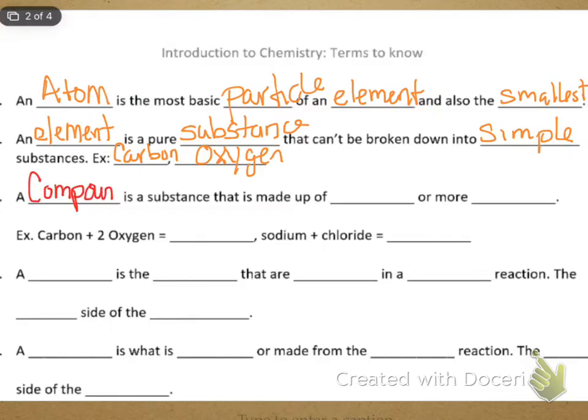Our next term then is compound. A compound is a substance that is made up of two or more elements. Again, we've had the word compound before. We've talked about it when we talked about photosynthesis. Carbon plus two oxygen create CO2. Sodium plus chloride creates NaCl or salt. So those things are separate and when you have more than one or you combine them and there's a reaction that makes those new compounds.